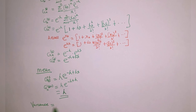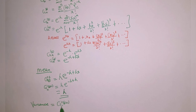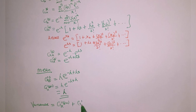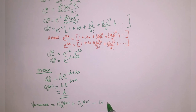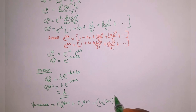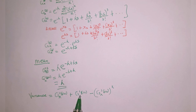The next thing we look at is the variance. The variance is equal to G at the second derivative evaluated at s equal to 1, plus G at the first derivative evaluated at s equal to 1, minus the square of G at the first derivative evaluated at s equal to 1. We have already found the first derivative, so now we find the second derivative.